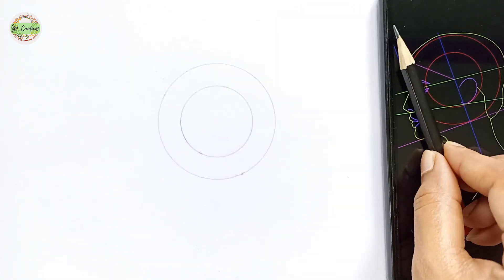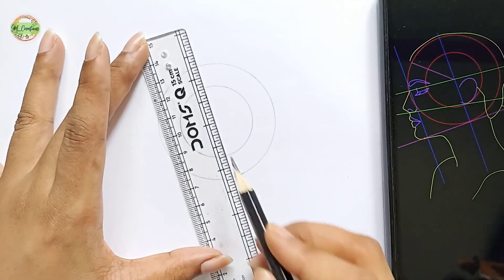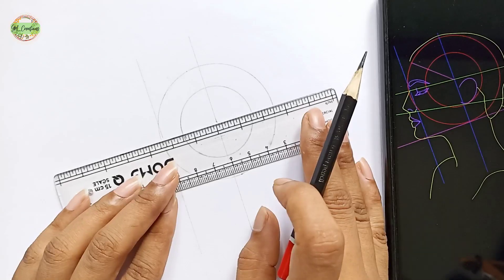To get started, let's begin by drawing two circles either with a compass or by freehand. If you are a beginner, I recommend using a compass for precision.